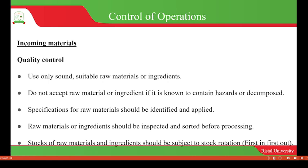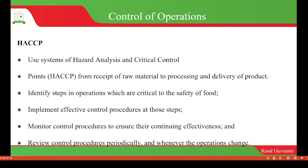The ones we stocked first we have to make sure we use first in food processing. Whenever we talk about control of operations and especially incoming raw materials, we always use a system known as Hazard Analysis and Critical Control Point (HACCP), as we have discussed previously.